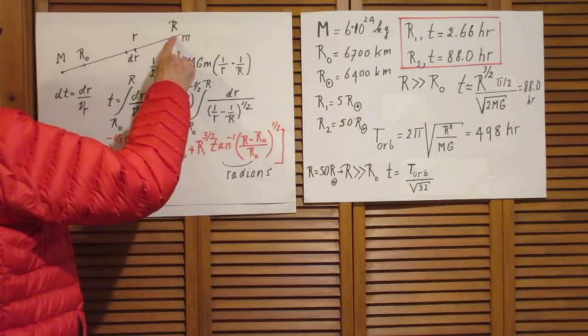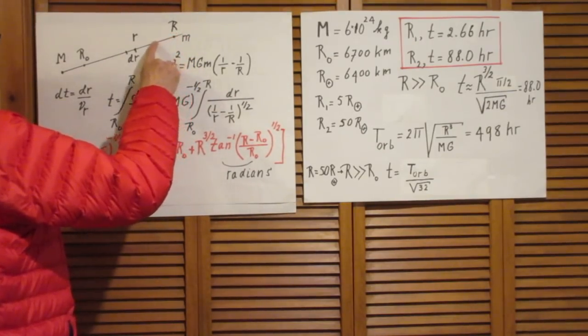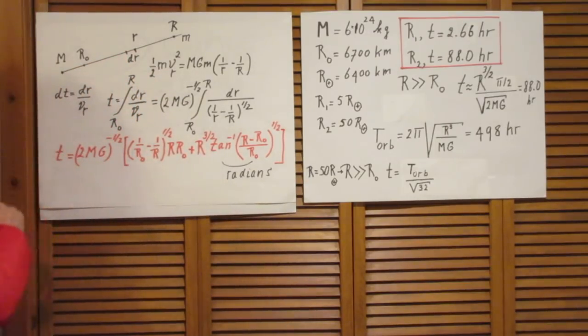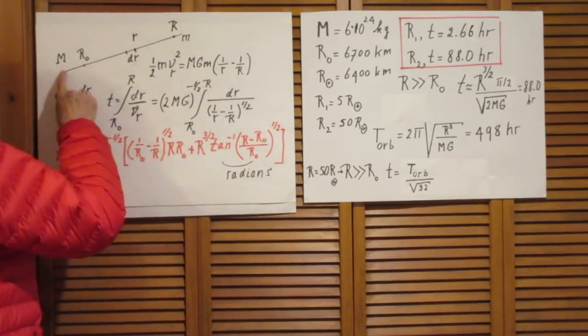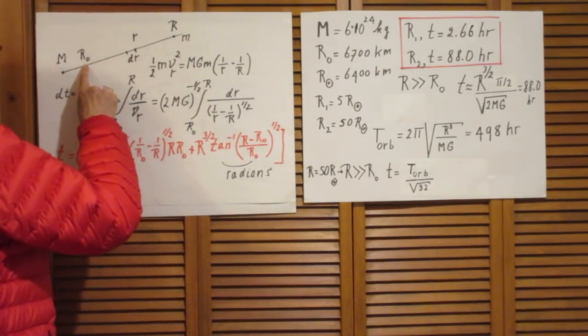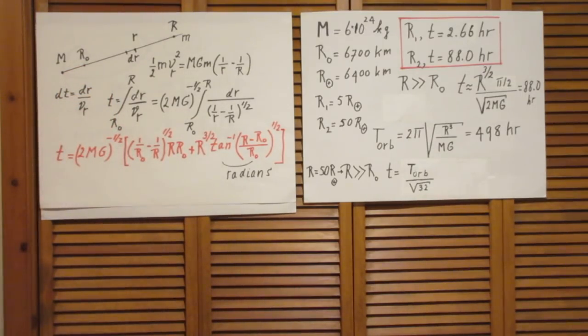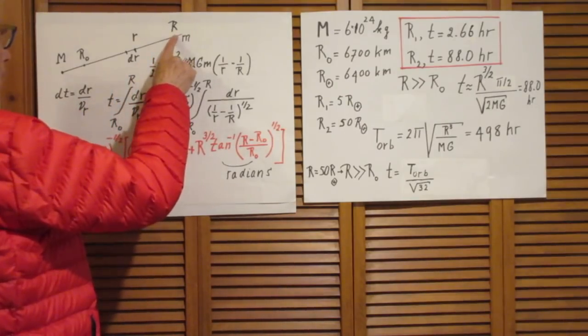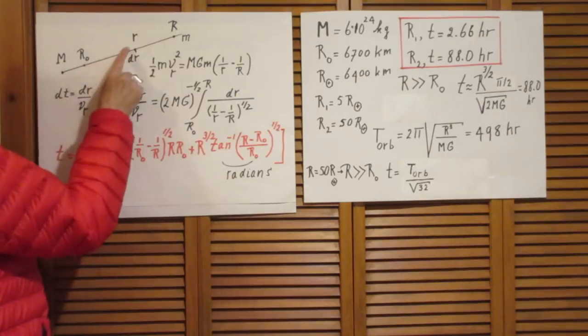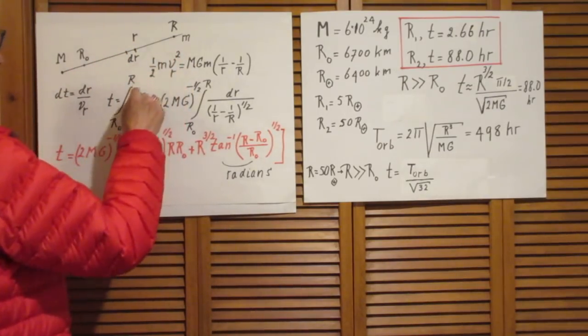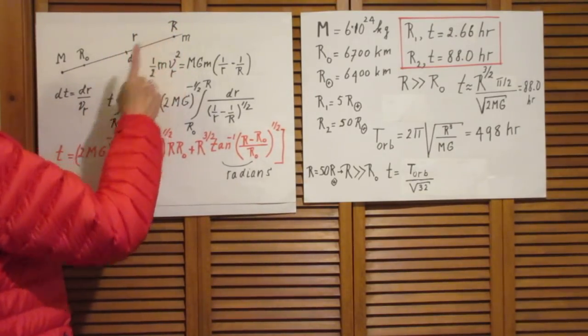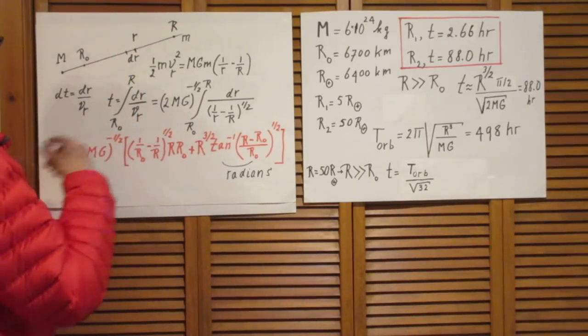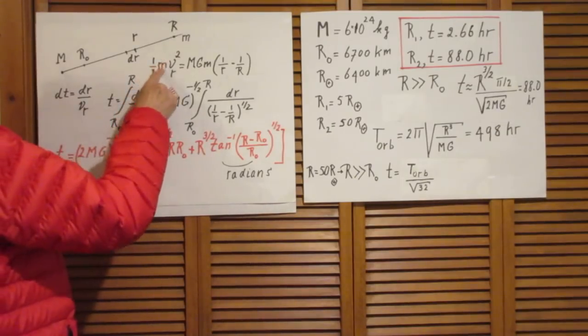We release it at zero speed at this location and so it will radially freefall towards this planet. And the question now is how long will it take to go from this position, a distance capital R from the center, to a distance R0 from the center. The physics is easy. When the object has reached little r, this distance is little r, then the kinetic energy is the difference in potential energy between this point and that point.